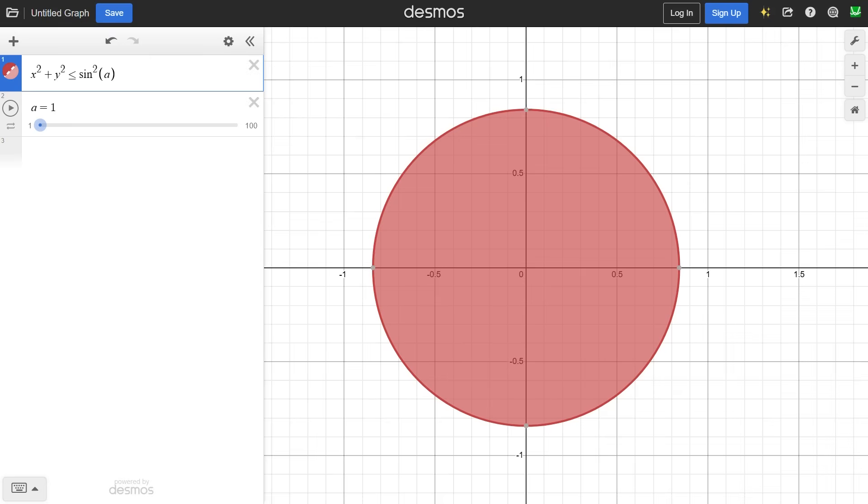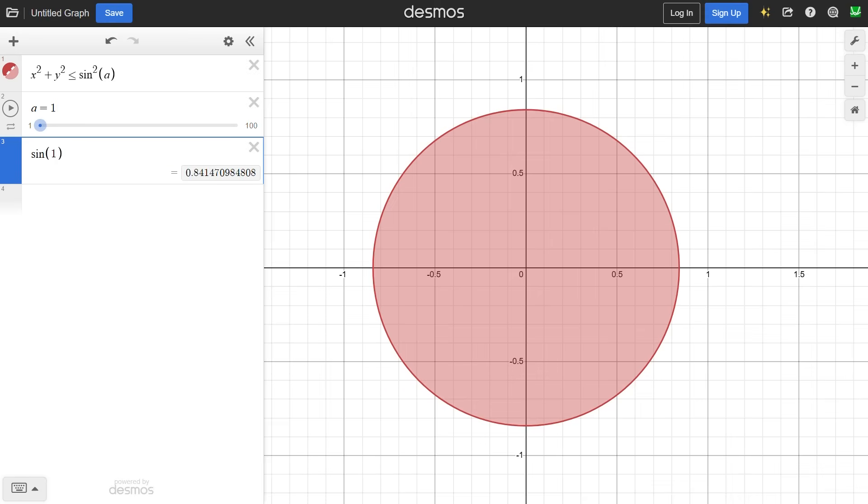Let's visualize this in Desmos. Here I've drawn a circle whose radius is sine of a. Right now a is 1, so the radius is sine of 1, which is around 0.84.